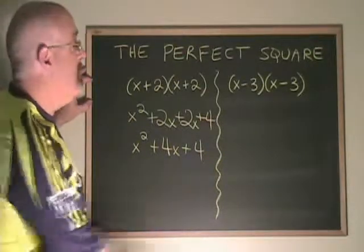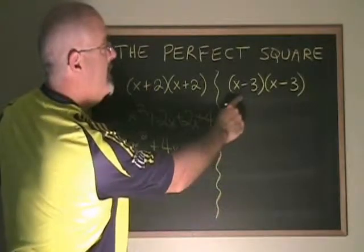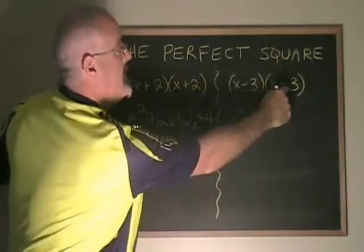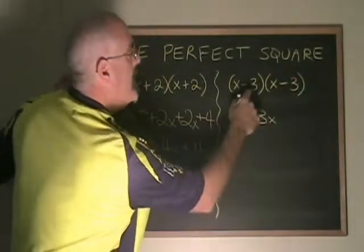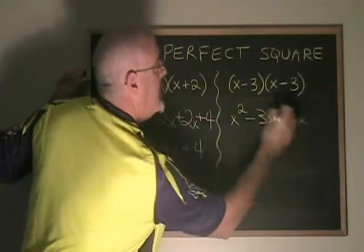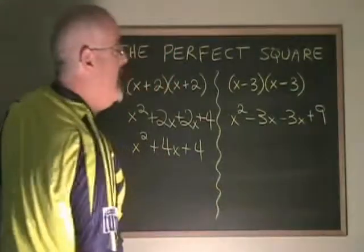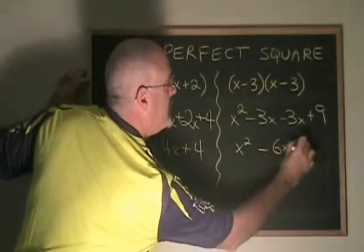Does it work the same way when you have a minus sign in the binomial? Using the FOIL in this example, x times x is x squared, x times negative 3 is negative 3x, negative 3 times x is another negative 3x, and negative 3 times negative 3 is positive 9. Simplifying, we have x squared minus 6x plus 9.